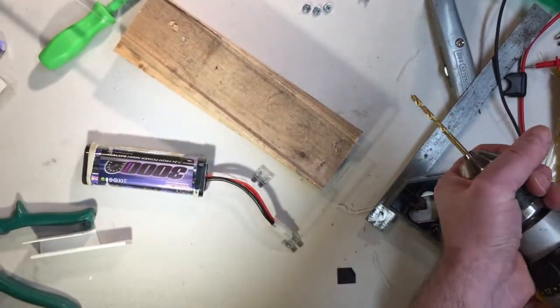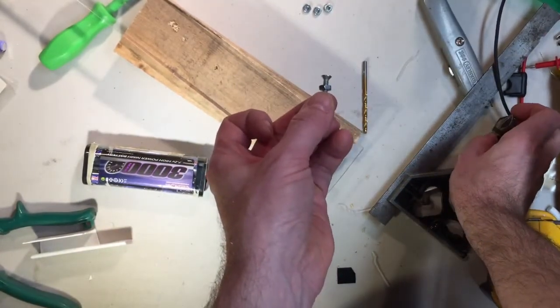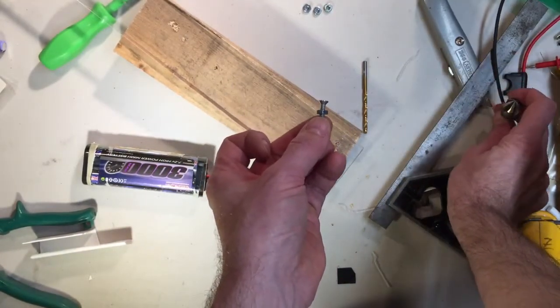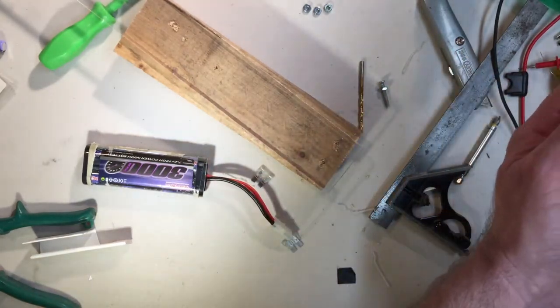And then I chose countersunk screws. Like this right here. Because when they go into the material, if they're countersunk, they'll sit flush with the bottom. So easier to explain with a picture.